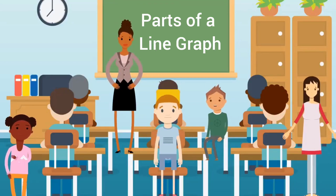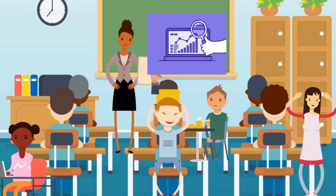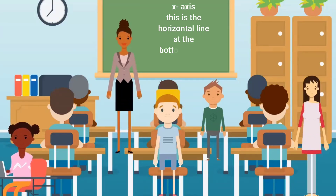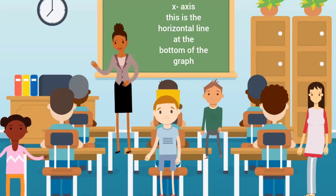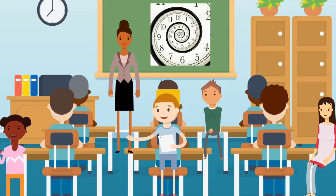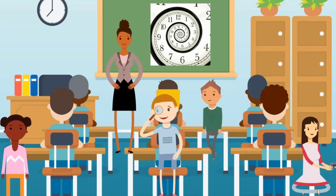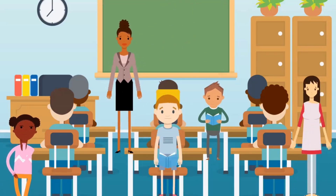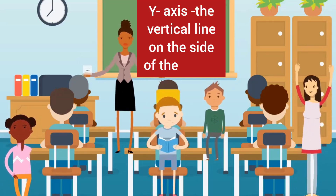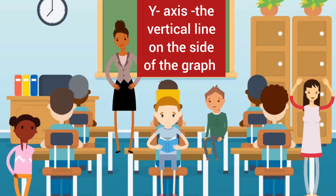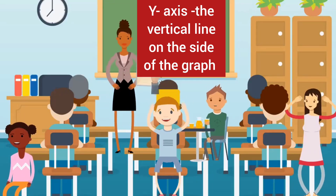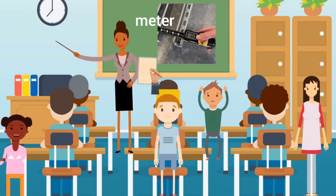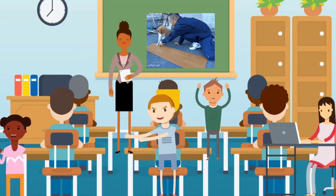Let's look at the parts of a line graph. What can you see in this graph? First, we have the x-axis. This is the horizontal line at the bottom of the graph. It shows the time, like minutes or seconds passed. In our example, it could show time in minutes. Then, we have the y-axis. This is the vertical line on the side of the graph. It shows the distance — how far someone has moved. It could be measured in meters, kilometers, or any unit of distance.